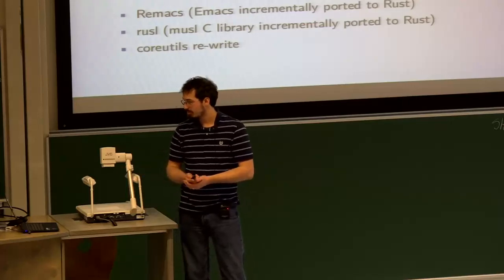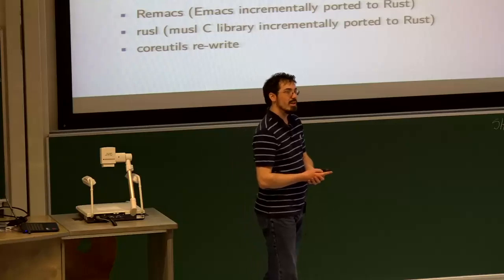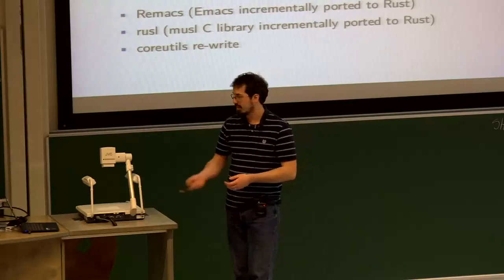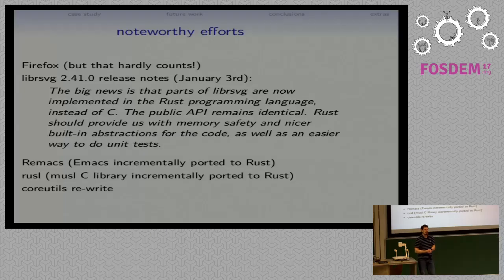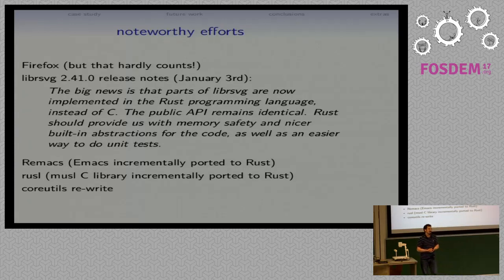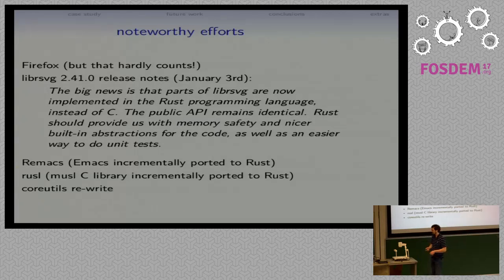There are other projects that have been experimenting with migrating parts of their existing C code to Rust, like Emacs being incrementally ported to Rust, because we didn't have enough operating systems projects in Rust yet. There's also Russel, the experimental port of the Musl C library, done as an educational exercise just to see how it would go. There are folks rewriting coreutils. You can dig through Reddit and find a long list of these projects.